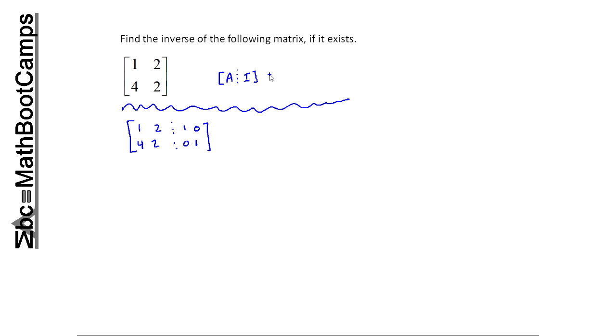and I'm going to do some row operations, and I'm going to get the identity, and on the right hand side it will be augmented with the inverse assuming it exists.